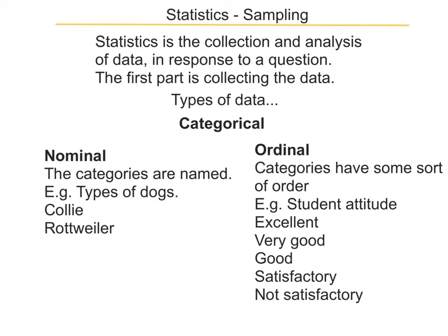An example of nominal data are types or breeds of dogs, such as Collie, Rottweiler, etc. In ordinal data, the categories have some sort of order. A good example of that is on a student's report, where their attitude can be excellent, very good, good, satisfactory, or not satisfactory. We all know that excellent is better than very good, and very good is better than good, etc. So there is an order in the actual categories that we're counting.